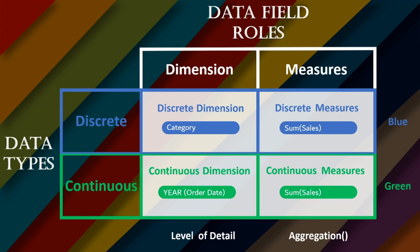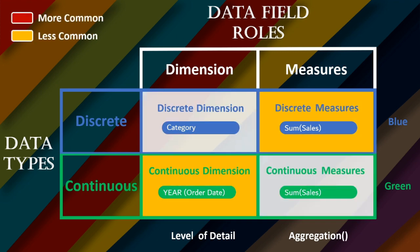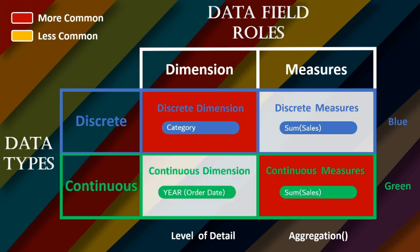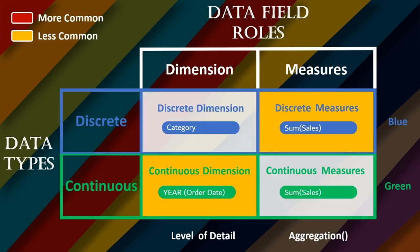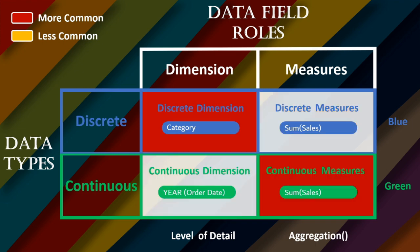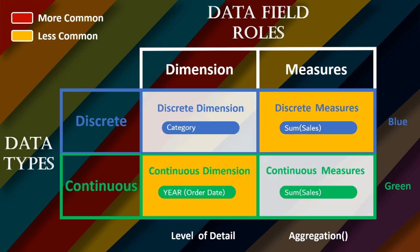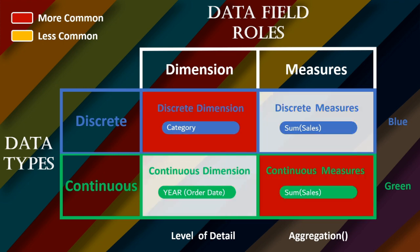You can see here that there are red highlighted boxes and yellow highlighted boxes. The red highlighted boxes show the fields most commonly used, and the yellow boxes show the less commonly used ones. Most commonly you will hear about Discrete Dimensions and Continuous Measures. Less often you will hear about Discrete Measures and Continuous Dimensions. These are the fields in the Data Pane over which we work in Tableau.